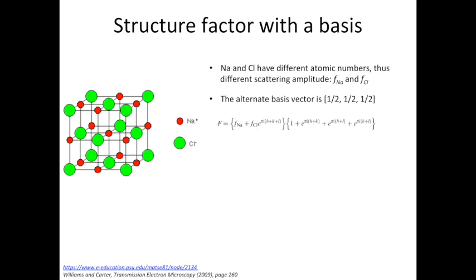The equation has two parts. The part on the left is the scattering amplitude considering both sodium and chlorine. The amplitude of chlorine is multiplied by e to the power of pi i (H plus K plus L). This is to consider the phase factor or the alternate basis vector. On the right, it's something that should be familiar to you. It's just simply the structure factor of FCC.